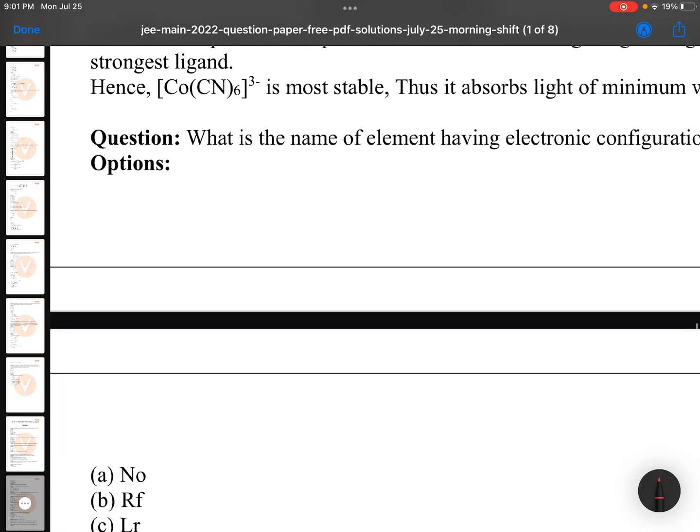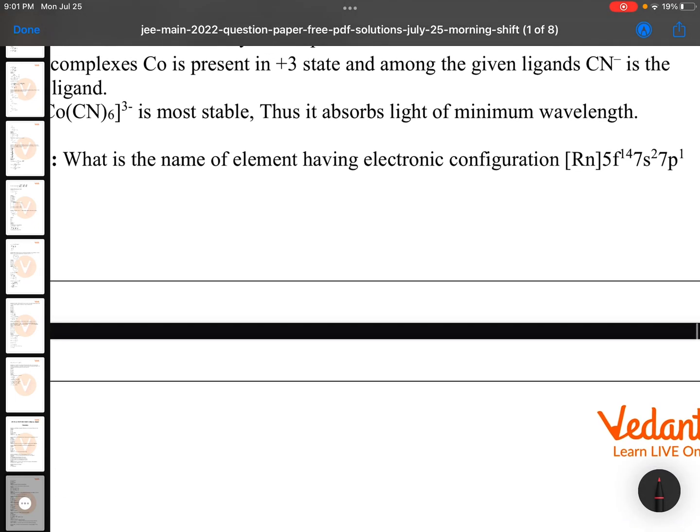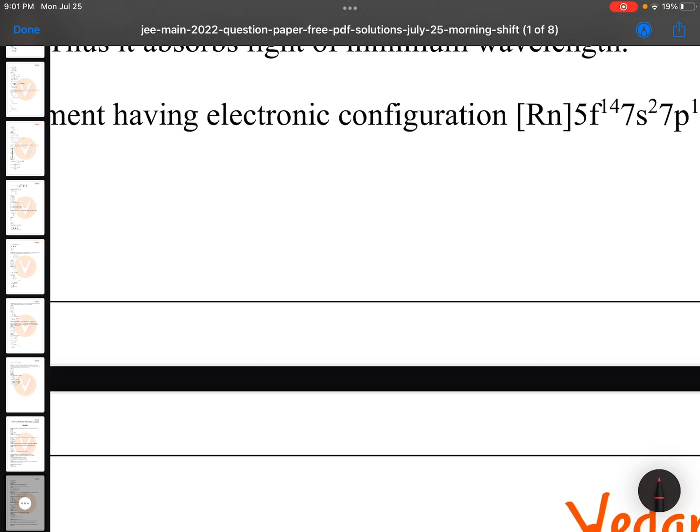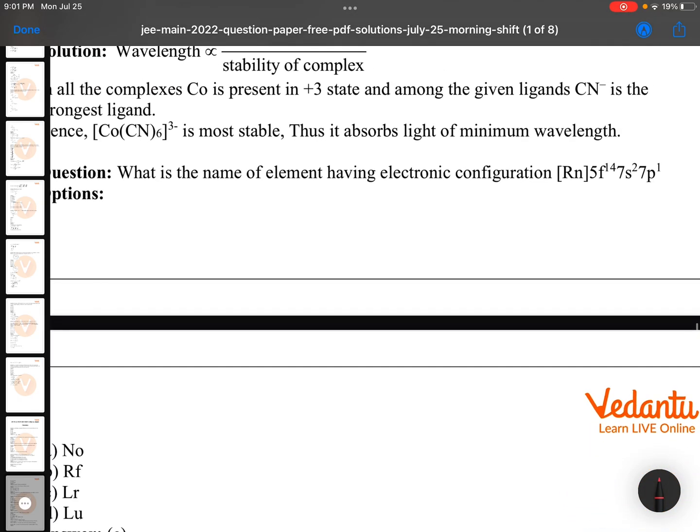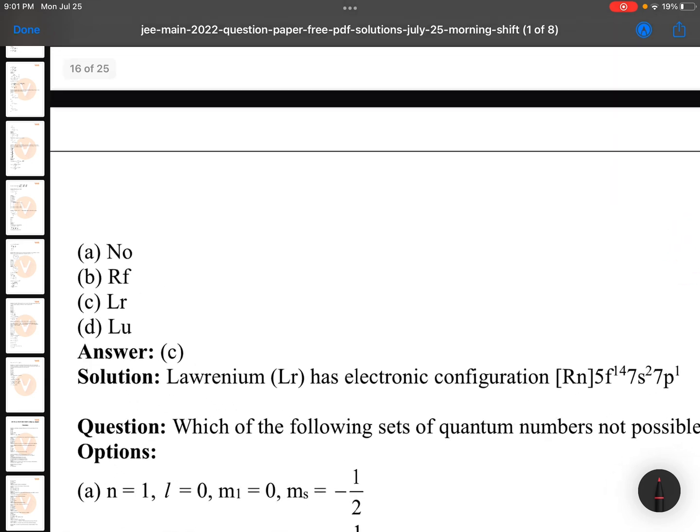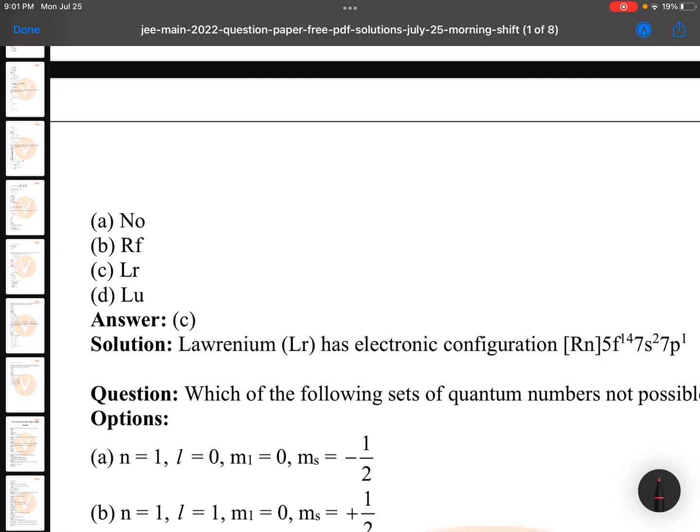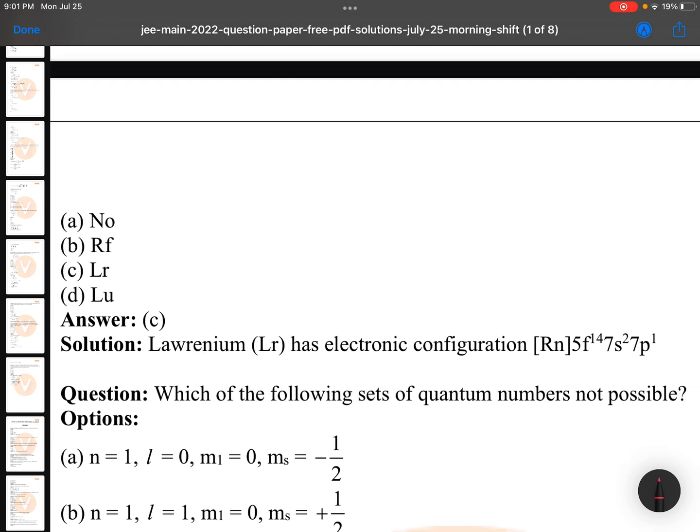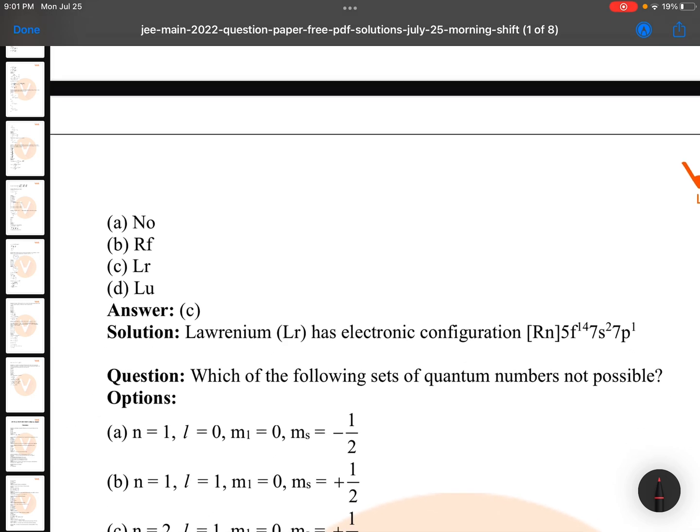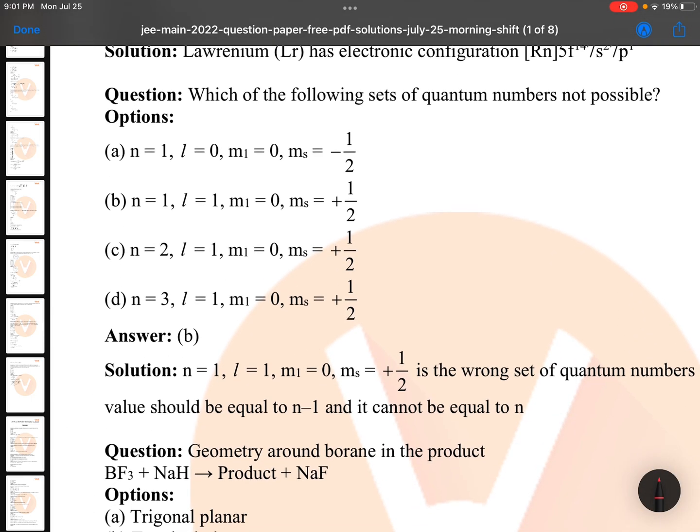What is the name of element having electronic configuration of radon 5f14 7s2 7p1? If you add all of those, you can get it as Lawrencium. Lawrencium electronic configuration 5f14 7s2 7p1. One type of memory, but by adding those numbers also you can get it easily.